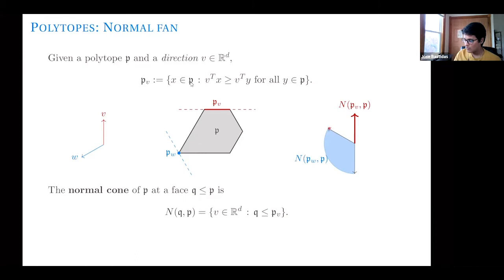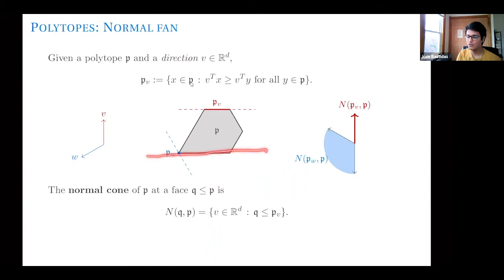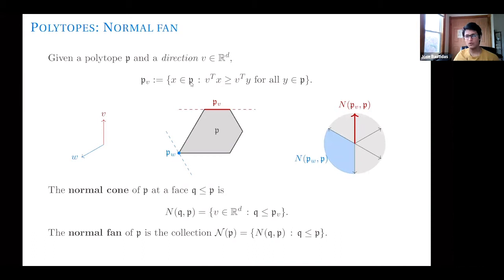I consider the closed cone — even if I take a direction on the boundary, maximizing in that direction gives a face that contains the point I'm interested in. The normal fan of the polytope is the collection of all normal cones across all faces of P. This is a collection of polyhedral cones. It's a complete fan, meaning every point in R^d belongs to at least one cone. It's a fan, meaning the intersection of any two cones is a common face of both.